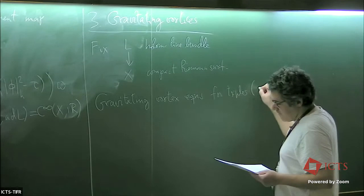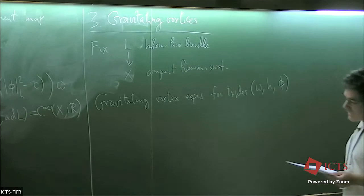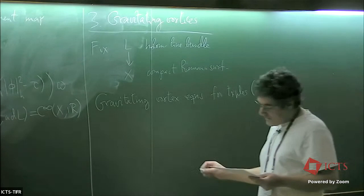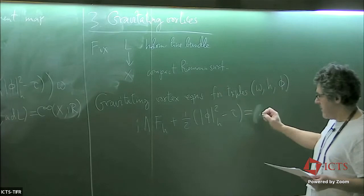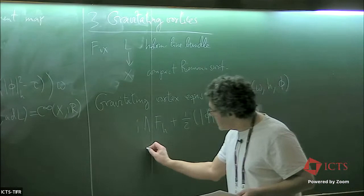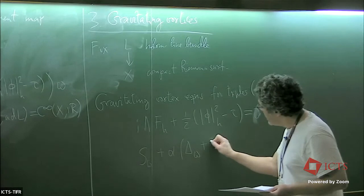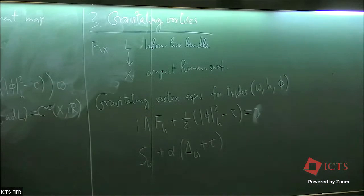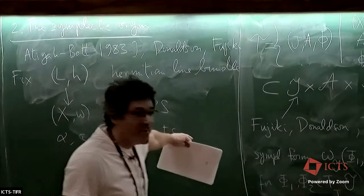So fix a holomorphic line bundle on a compact Riemann surface. Then gravitating vortex equations are the zeros of this moment map, but expressed—I mean, this is just for convenience. For triples, omega is the Kähler form, H the Hermitian metric on the line bundle, and phi is the holomorphic section of the line bundle.